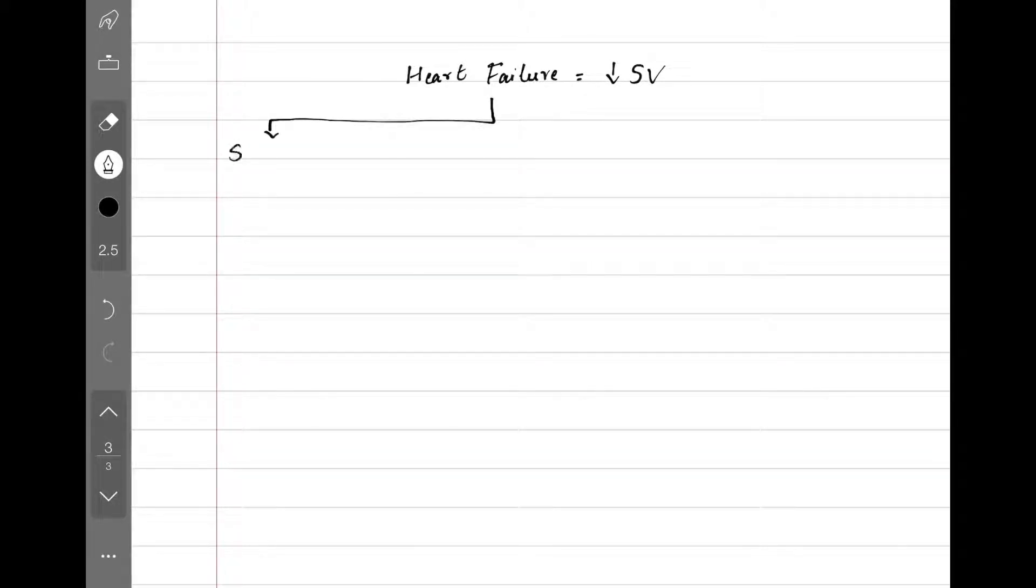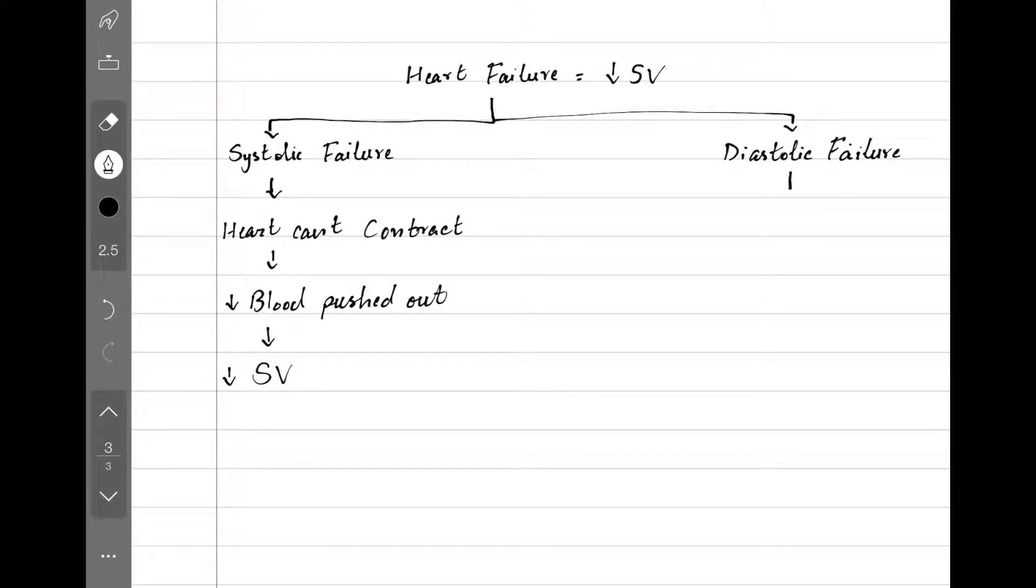In heart failure, the stroke volume decreases as well as cardiac output. We have two types of heart failure: systolic and diastolic. In systolic failure, the heart muscle can't contract properly because it's damaged, so less blood is pumped out giving us a low stroke volume. In diastolic failure, we have a stiff heart so its muscle can't relax properly to be stretched out and filled. Decreased amount of blood is coming in, so a decreased amount will be going out. That's how both types of heart failure give us a decreased stroke volume and cardiac output.